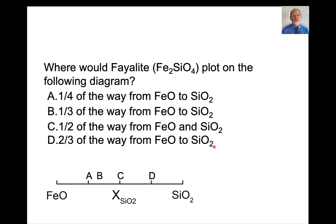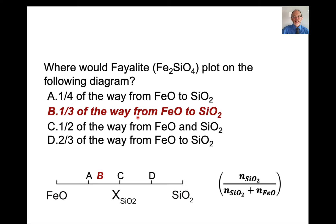So here's a question for you. Fayalite, so here's pure iron on this side, here's pure SiO2 on this side. Where would fayalite plot on this diagram? And the answer is one-third of the way from FeO to SiO2. So you can think of this, if we're plotting the proportion of SiO2 from zero to one, the number of moles of SiO2 is one, the number of moles of SiO2 plus the number of moles of FeO is three. One divided by three is one-third. That's where it plots right here.